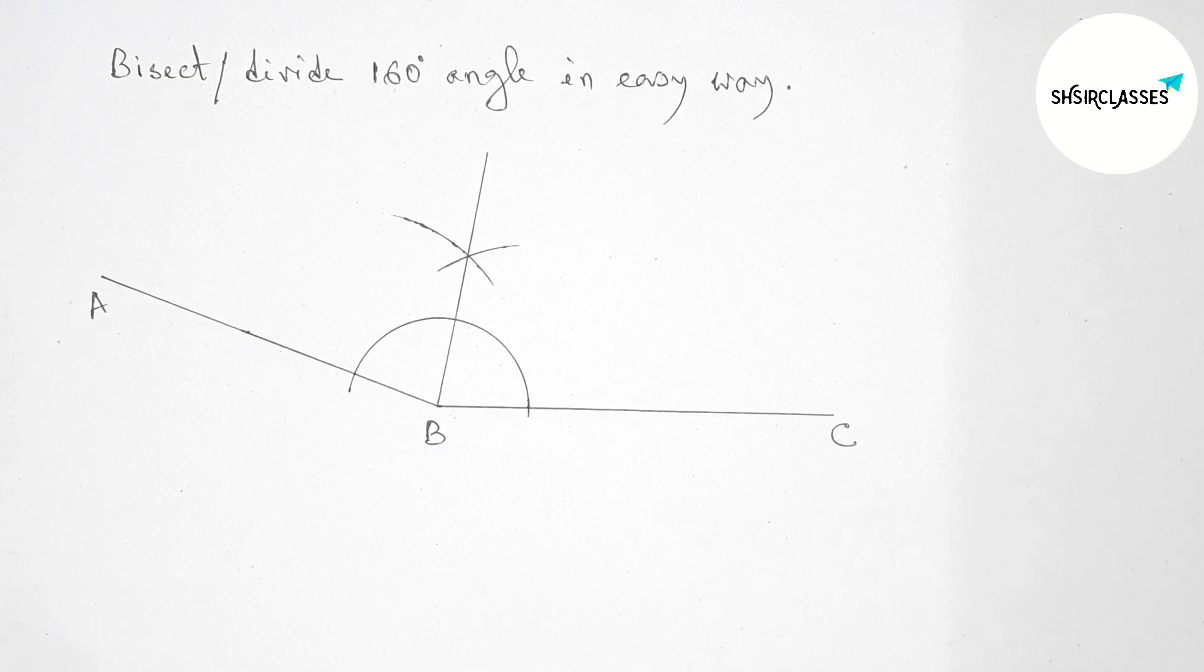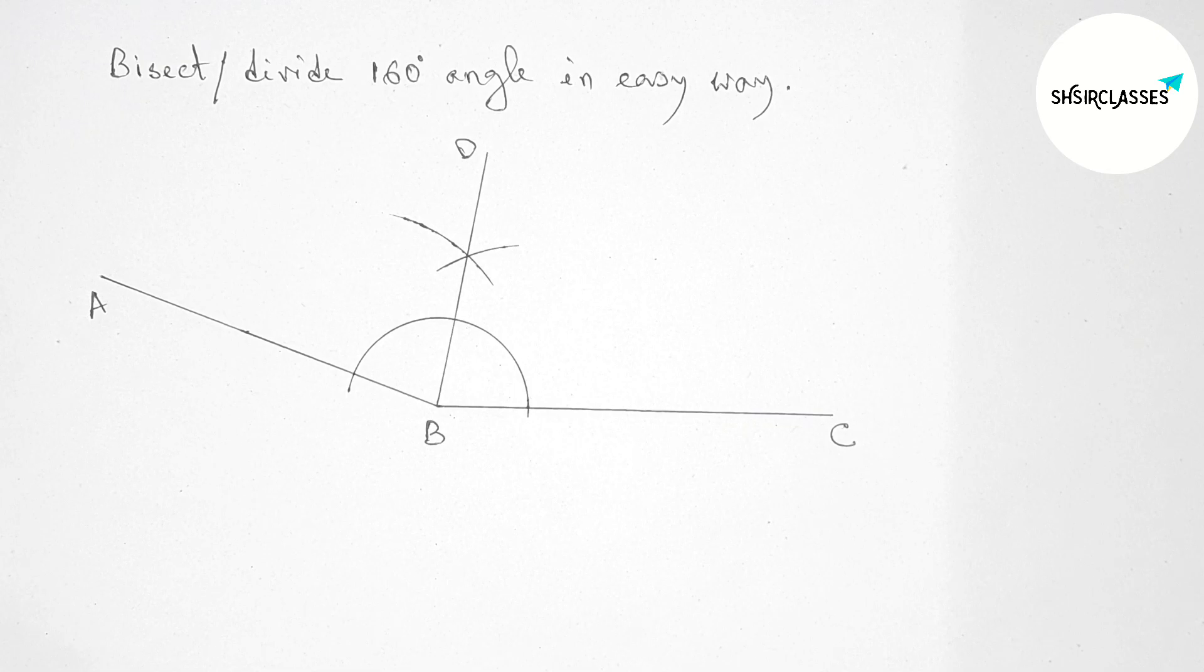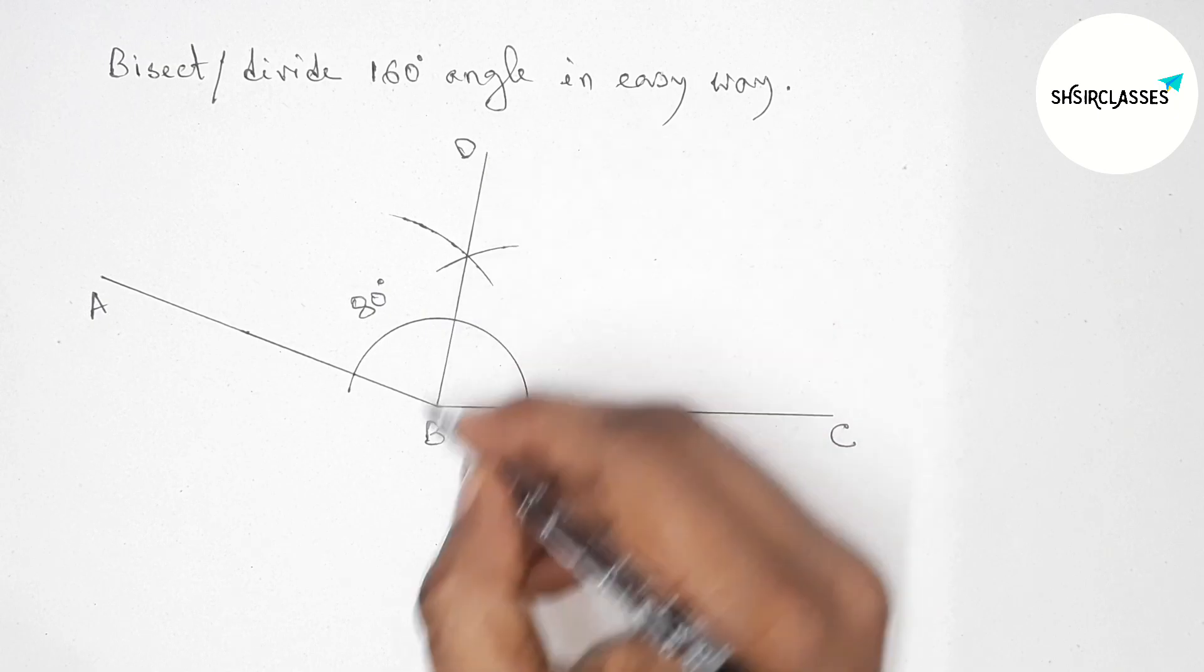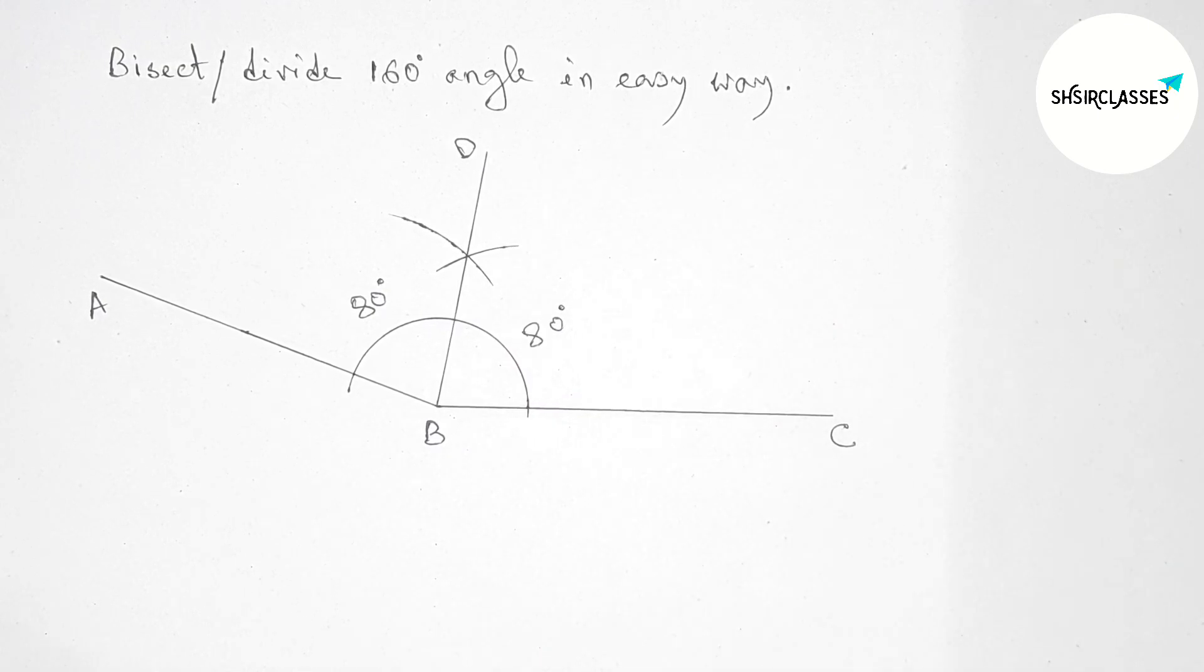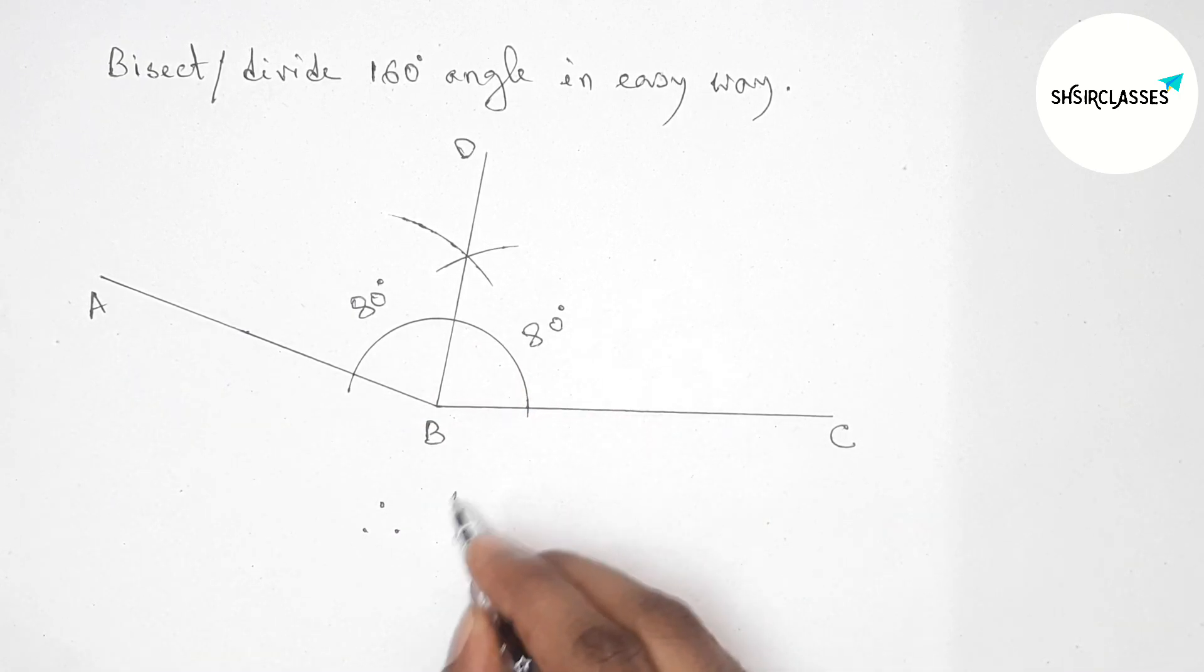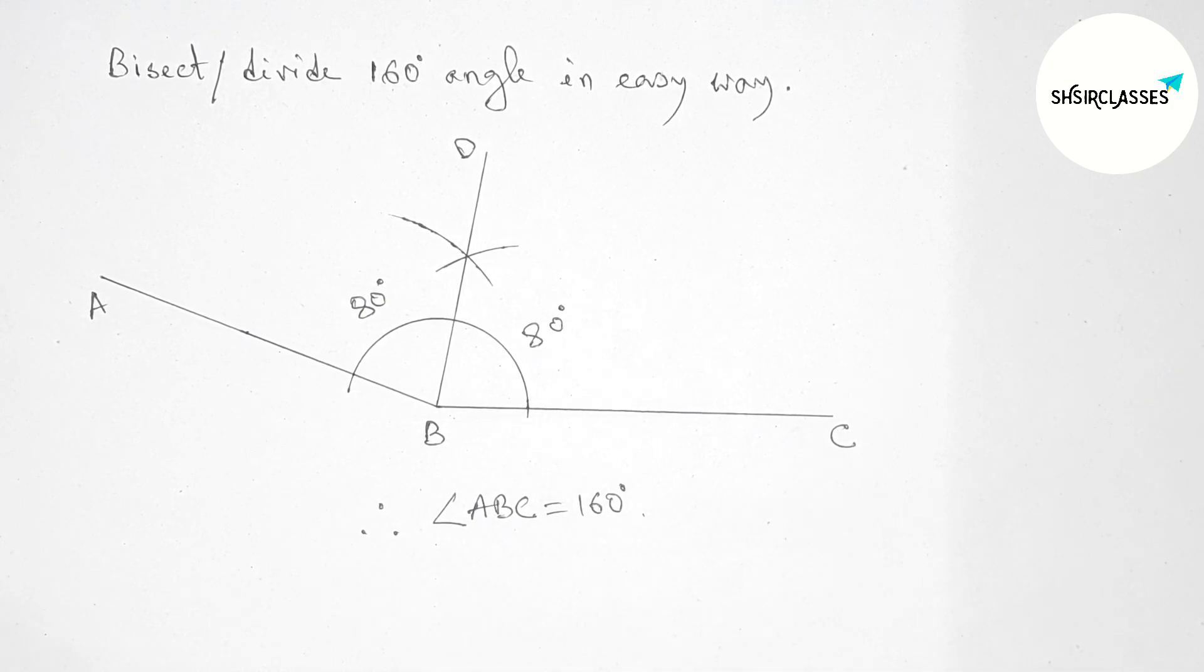So now taking here point D. Okay, so here angle ABD, this is 80 degrees, and angle DBC, this is also 80 degrees. So therefore here angle ABC, so angle ABC this is equal to 160 degrees. And angle ABD equals angle DBC, both are 80 degrees.